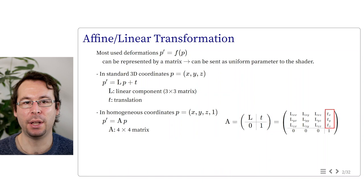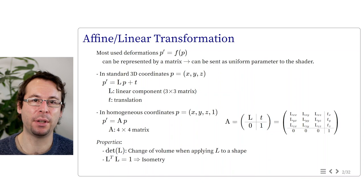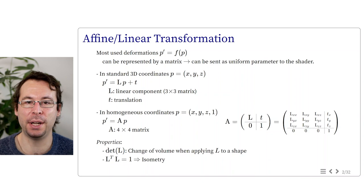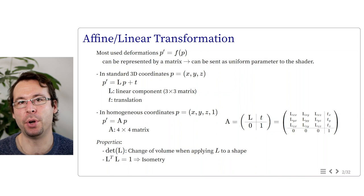The 4×4 matrix A has a block structure: the top-left corner is the 3×3 matrix of the linear part, the top-right column is the translation, and the bottom row is 0, 0, 0, 1. Some specific properties can be directly computed from the linear part matrix. The determinant of L relates to the change of volume: applying L to a shape tells us how its volume is modified. Also, if L-transpose times L equals identity — equivalently L-transpose equals L-inverse — then the transformation is an isometry, meaning it preserves distances between all points.